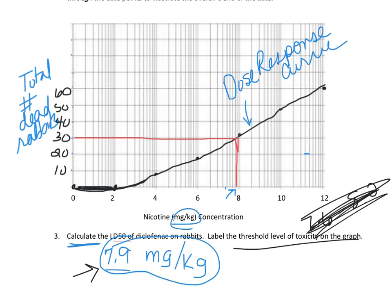Label the threshold of toxicity on the graph. The threshold level is the point where before it there is tolerance, and after it deaths begin with higher doses. Our actual threshold point is right there — it's the point when deaths begin with increased dose. Sometimes there is no threshold and deaths begin immediately with increased dose, but for this data there is one. The threshold is a specific point on the graph, not a range — labeling it as a range is wrong.